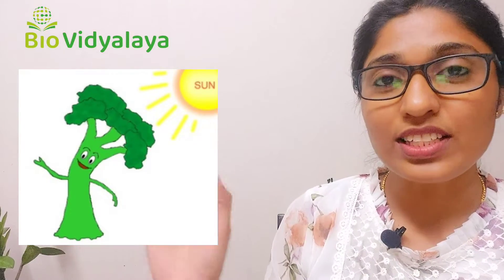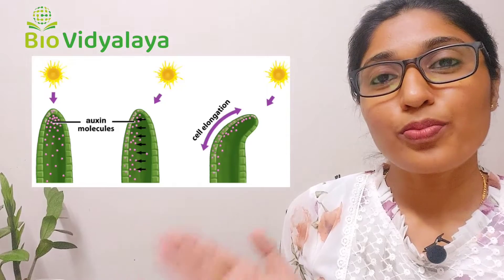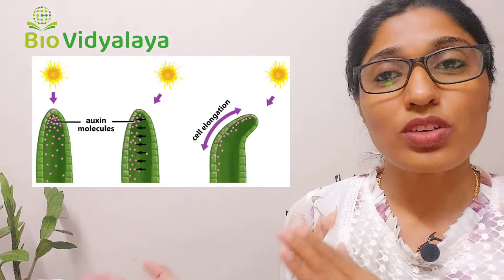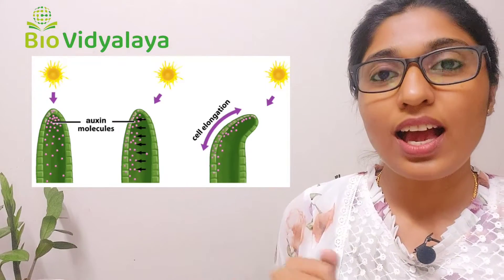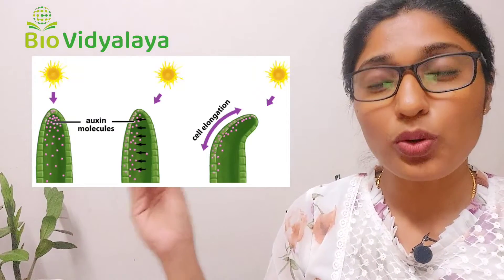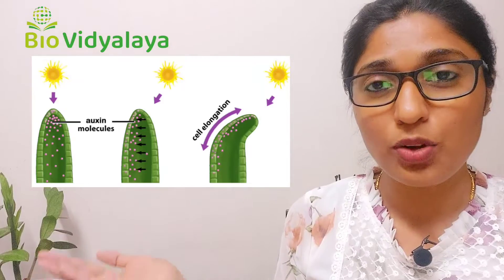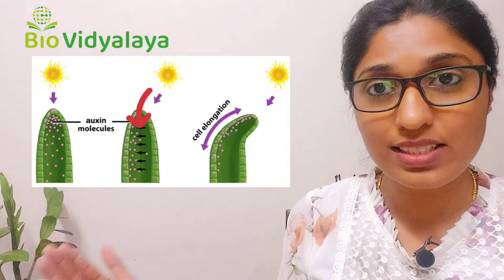The growth of plants towards the light is called phototropism. The hormone responsible for phototropism is auxin. As you can see in this picture, light is falling on one side of the plant, and as a result the hormone auxin will accumulate on the other, darker side of the plant.